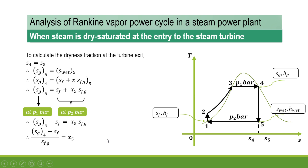The value of Sg4 corresponds to boiler pressure P1, and point 5 corresponds to condenser pressure P2. So the value of Sg is taken at P1 bar, and the values of Sf and Sfg are taken at condenser pressure P2 bar.